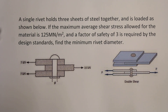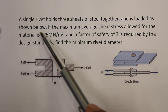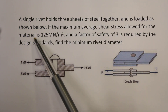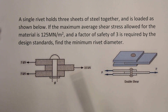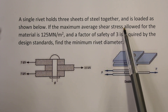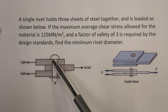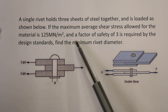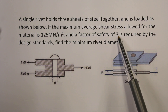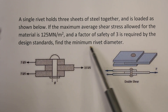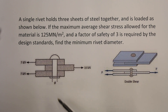In this video we'll be going through solving the following question. A single rivet holds three sheets of steel together and is loaded as shown below. Both of these diagrams show the same situation. If the maximum average shear stress allowed for the rivet material is 125 mega newtons per meter squared, and a factor of safety of three is required by the design standards, find the minimum rivet diameter for the section shown.